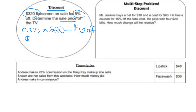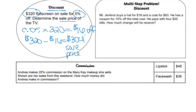To find the sale price, take the price of the TV minus the 5% discount. The discount is $16, so we subtract: $320 minus $16 equals $304 as the sale price — the price of the TV after the discount. Now we're going to go on to commission.